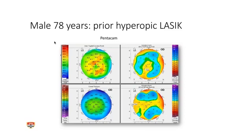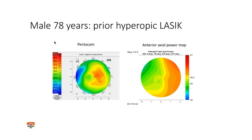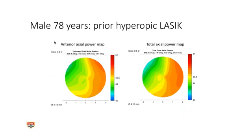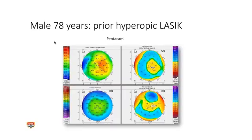Here's the left eye of the same patient. If you'd done just the anterior axial power map you might think that looks like a decent ablation — is the patient fixing properly? The Pentacam gives roughly the same information over a bigger area. That does certainly look like a decentered hyperopic LASIK ablation. There's a difference between the anterior axial and the total axial power maps — not a big difference, but some difference as you would expect. The overall Pentacam image confirms this was a decentered hyperopic ablation.